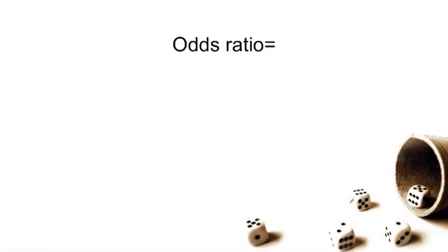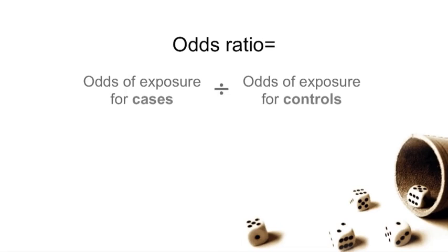The odds ratio is simply the odds of exposure for cases divided by the odds of exposure for controls. The odds ratio represents the strength of an association between exposure and outcome.